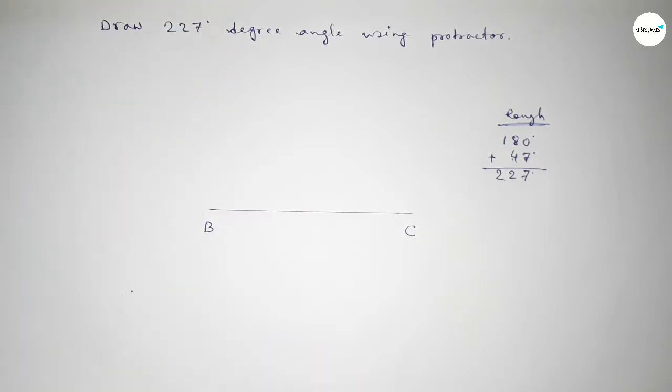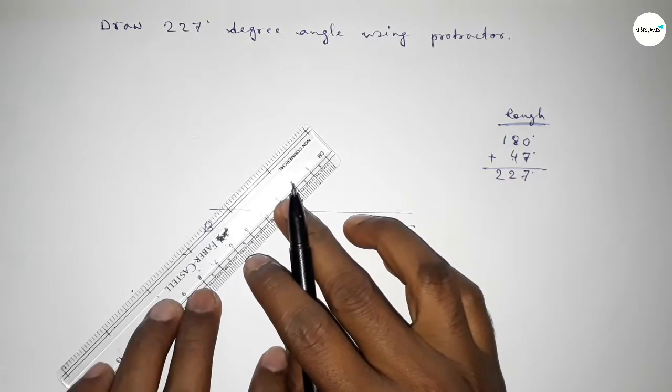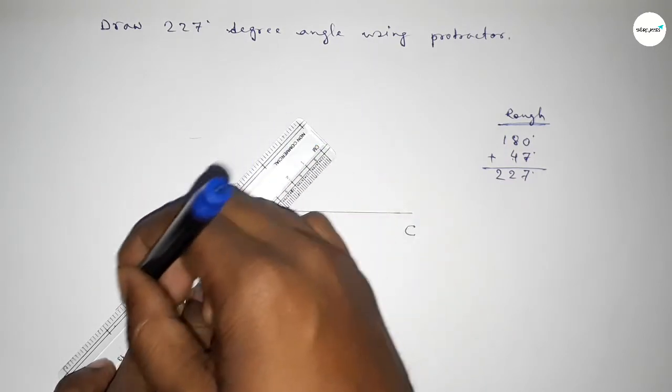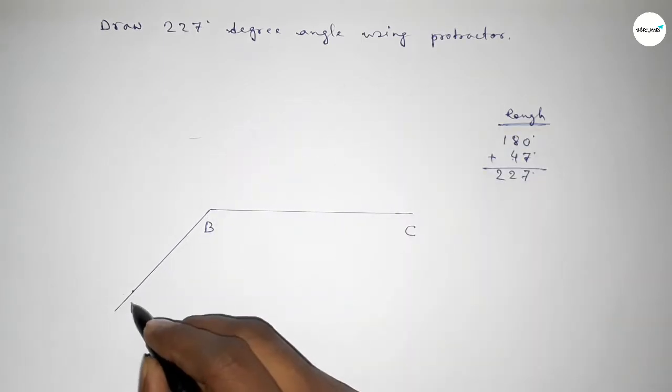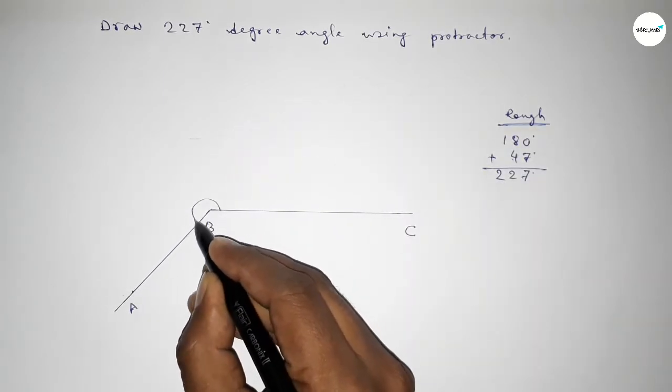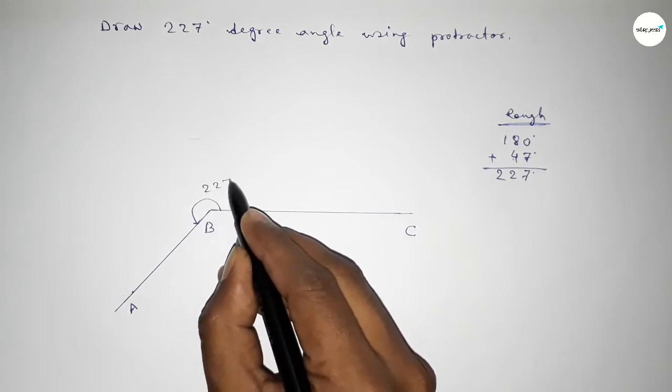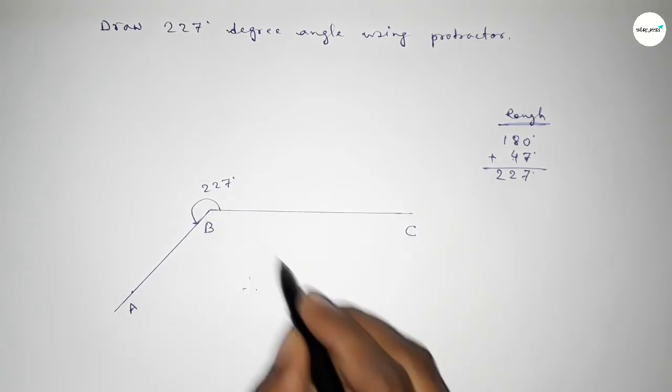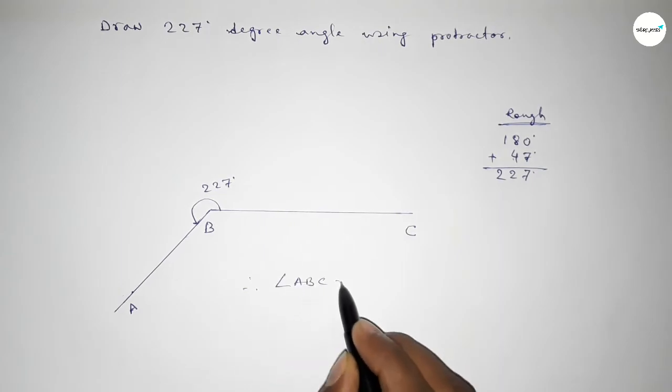So by adding 47 degree angle with 180 degree, then we can get 227 degree angle. So now joining this side and taking here point A. So angle ABC is 227 degree angle. Therefore, angle ABC equal to 227 degree. That's all.